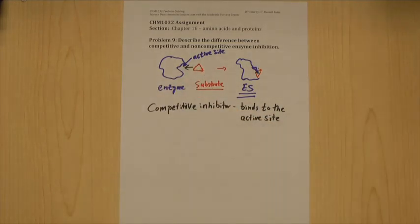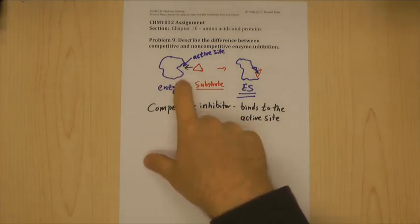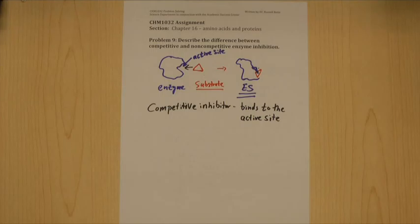So a competitive inhibitor will get right into the active site and will block the substrate. It in essence competes with the substrate for the active site.